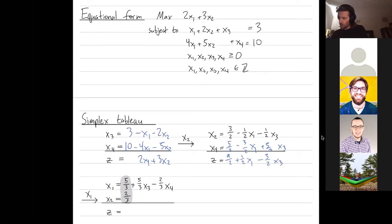So I have x4 is 5 halves minus 3 halves x1 plus 5 halves x3. And z is equal to 9 halves plus 1 half x1 minus 3 halves x3. So now I can only choose to pivot over x1 because the coefficient on x3 is negative. So let's pivot on x1. From this equation, x1 can increase up to 3. But from this equation, x1 can only increase up to something less than 3. So x4 is going to get removed when I add in x1. So I take this equation and I solve for x1.